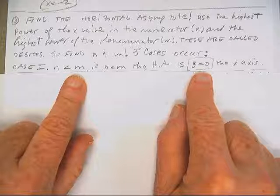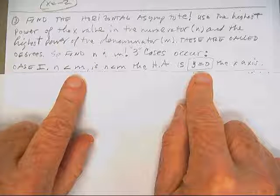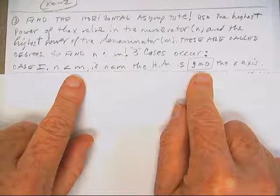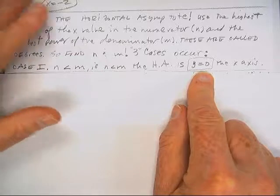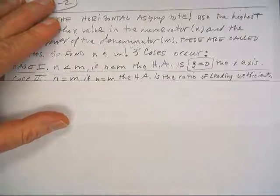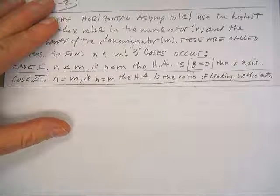Now if there was only one case, then this would be easier. You've got to figure out what case you've got. So you want to compare the degrees of numerator and denominator. Here's the second case.